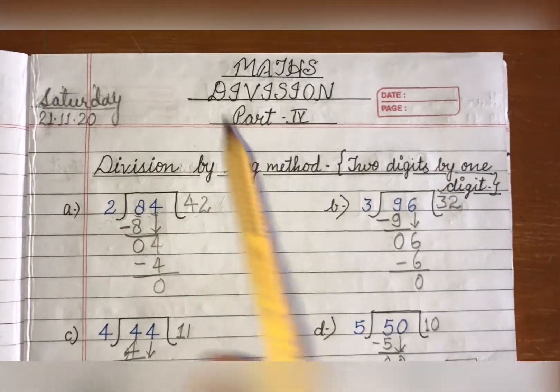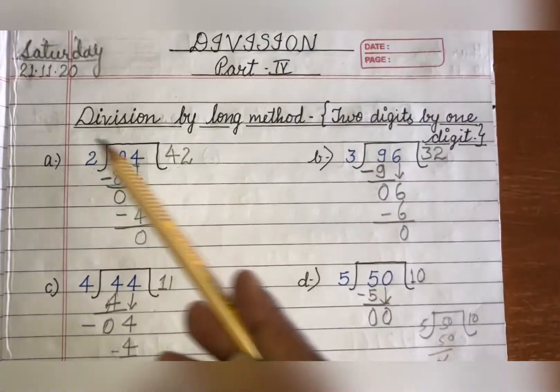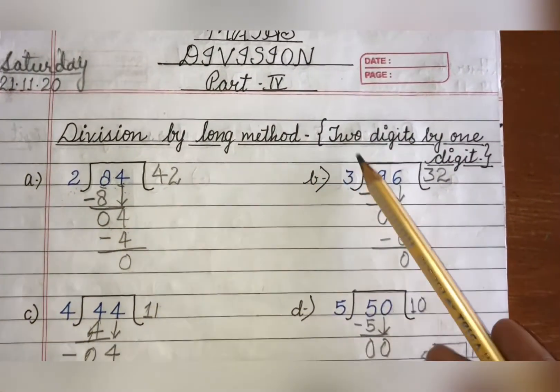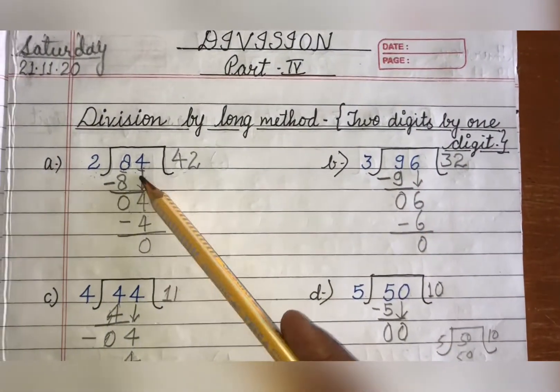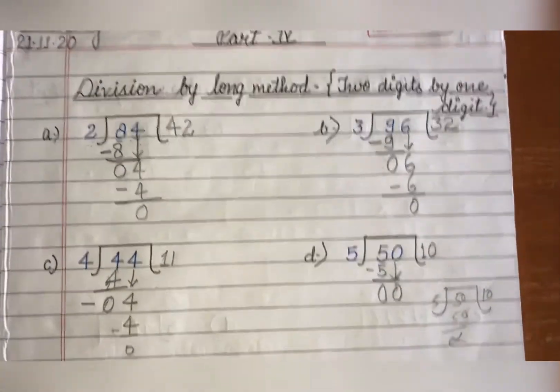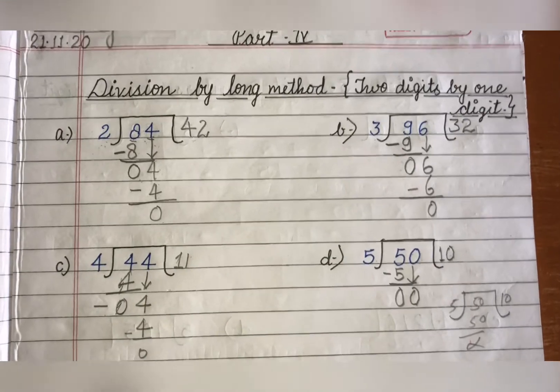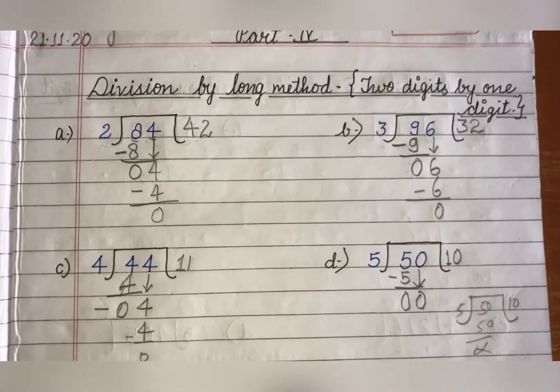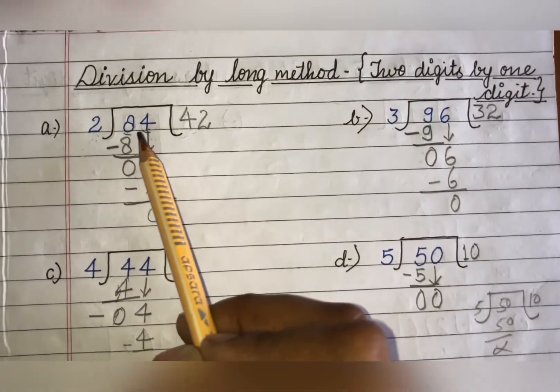So first of all you will start by writing the day and date and the topic and the heading which is division by long method, two digits by one digit. Today we will be dividing two digits by one digit. I have already explained all of this in your zoom class. So I request all of you to attend zoom class regularly and daily. Okay, so let's see again.